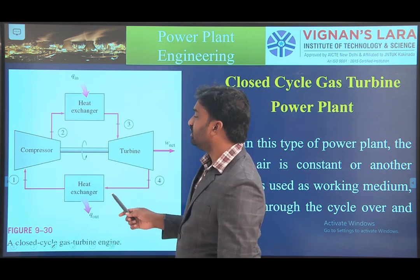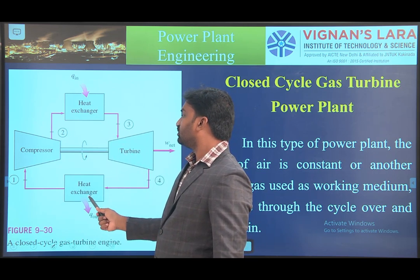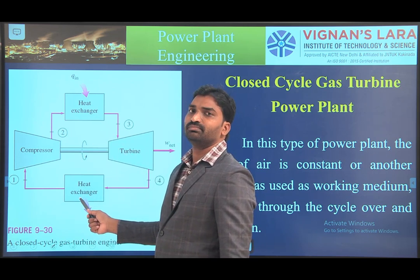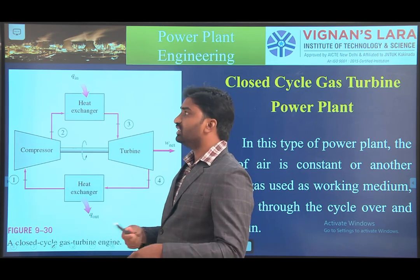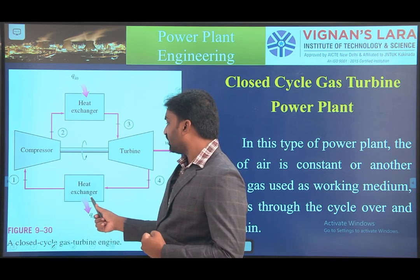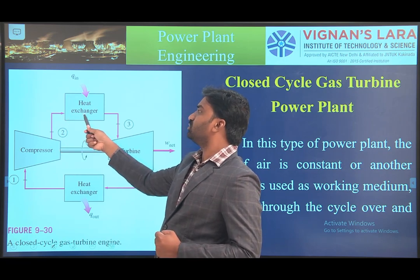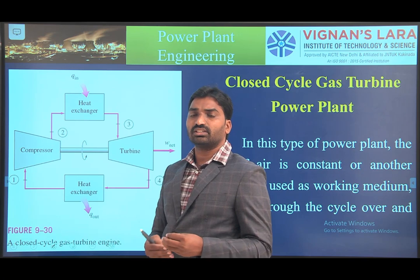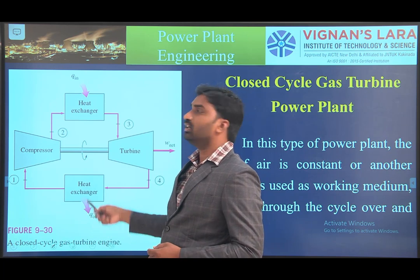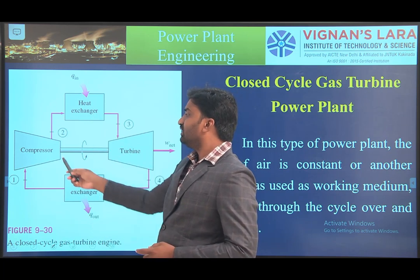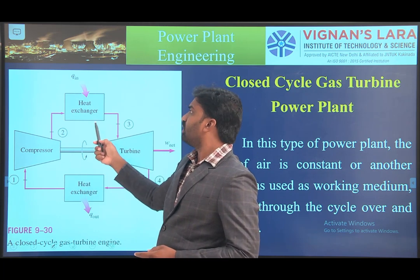In a closed cycle, the components include a compressor, a heat exchanger (which acts as the combustion chamber), a turbine, and a condenser (also a heat exchanger). The compressor compresses the air from the heat exchanger, then the compressed air passes to the heat exchanger where heat is supplied (Q input) and rejected (Q output). The compression and expansion processes are isentropic processes.